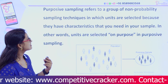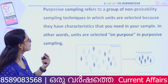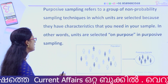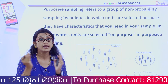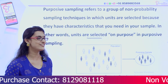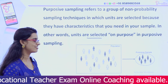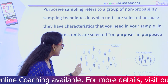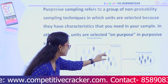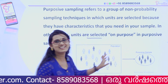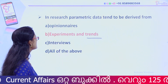Purposive sampling refers to a group of non-probability sampling techniques in which units are selected because they have characteristics that you need in your sample. It is used when you want to study specific individuals — for example, selecting students with particular characteristics for a valid study. That is called purposive sampling.